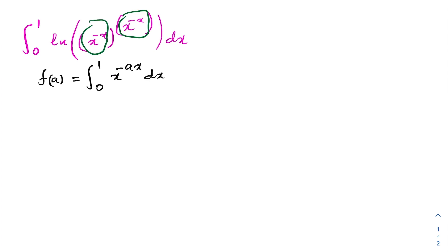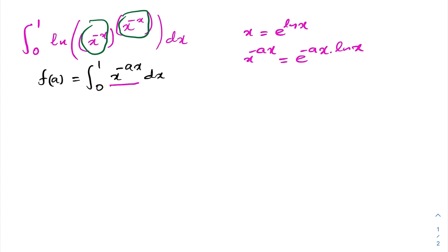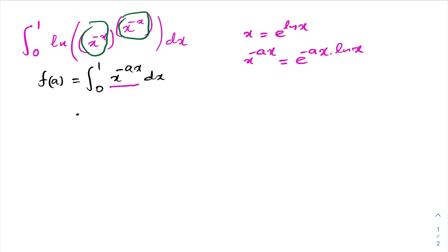Now, we know x we can write as e to the natural log of x. So here we have x raised to the minus ax. We can write x raised to the minus ax is equal to e to the minus ax times the natural log of x. So now our integral we can write as the integral from 0 to 1 of e to the minus ax times natural log of x, dx.